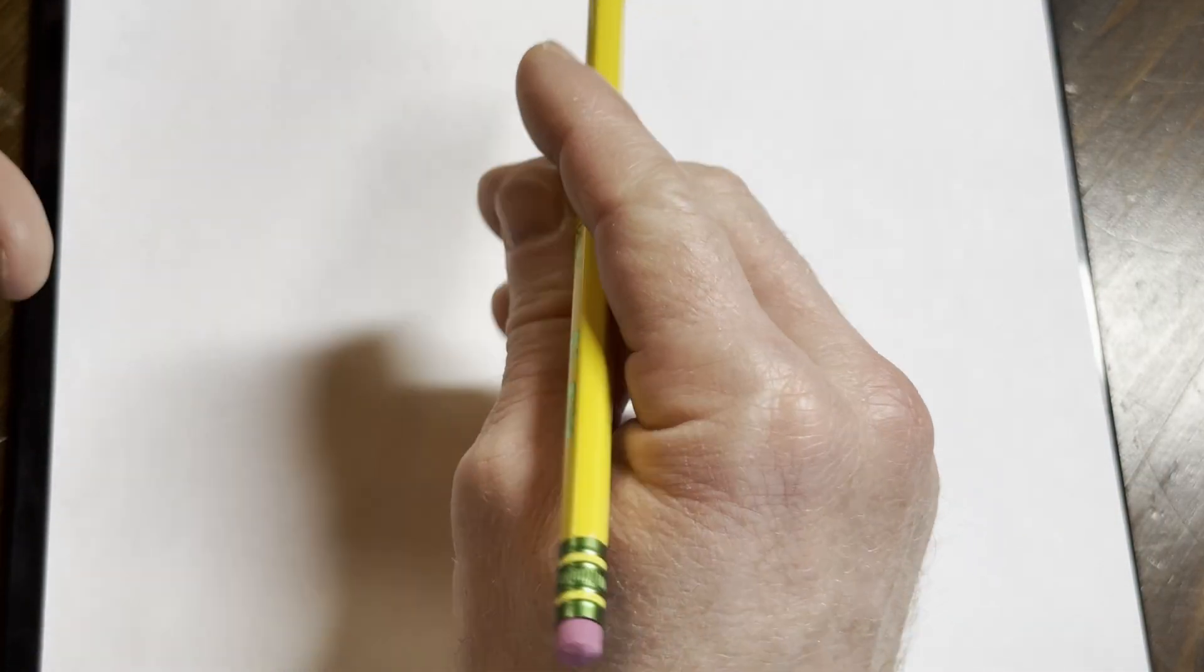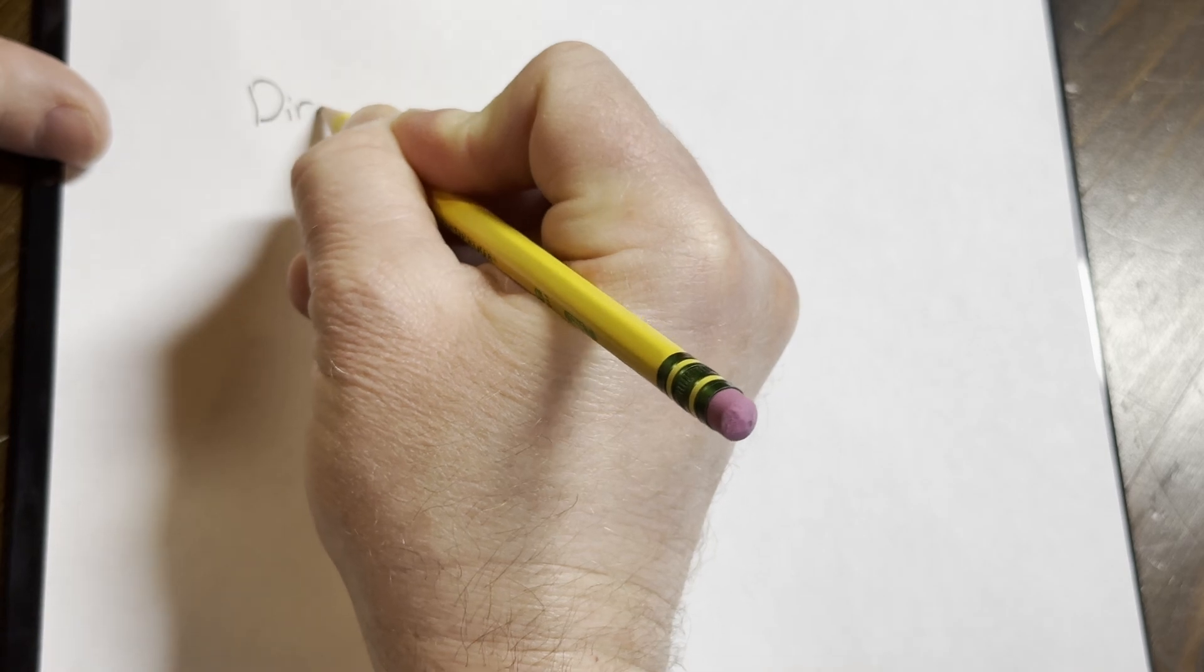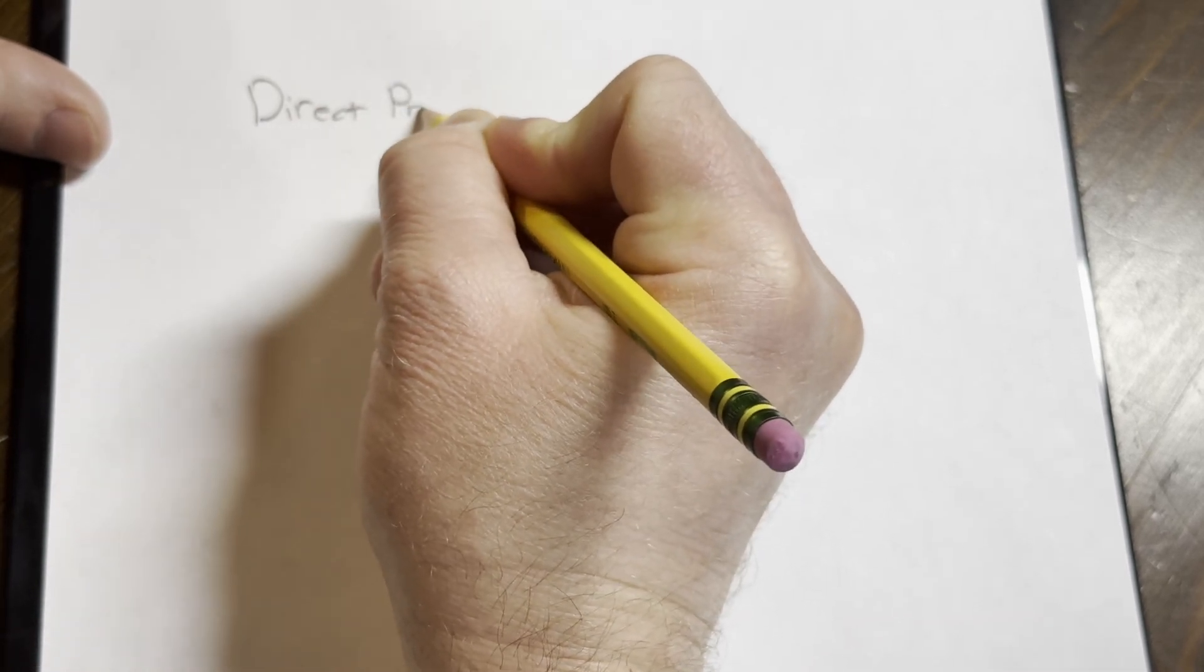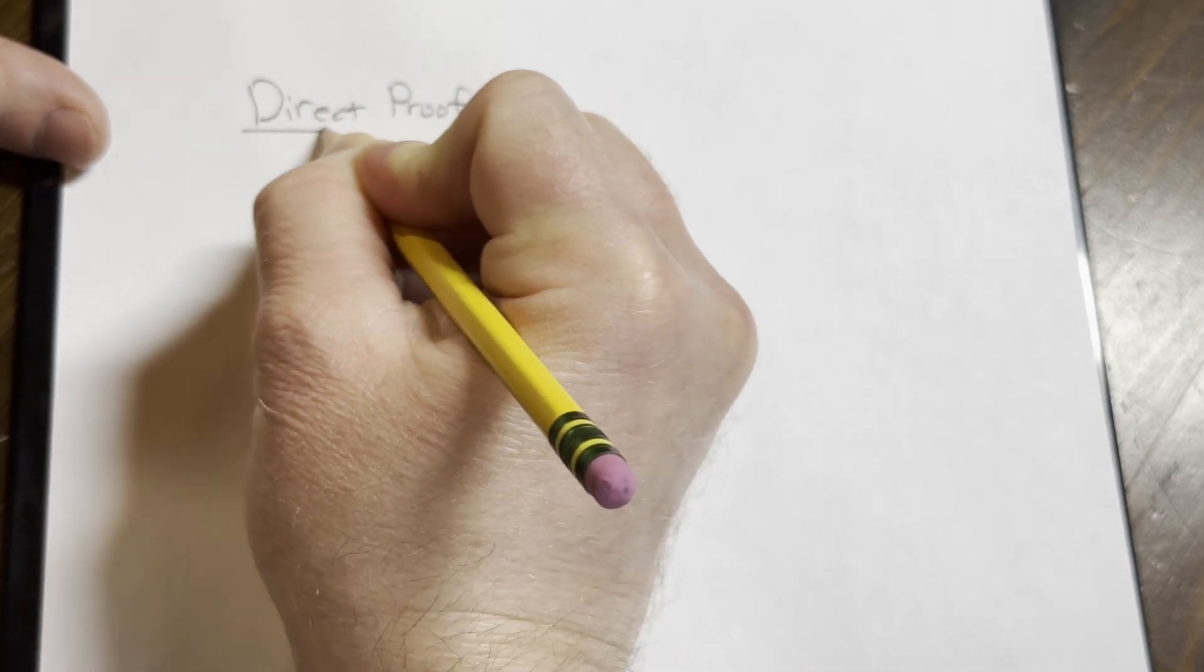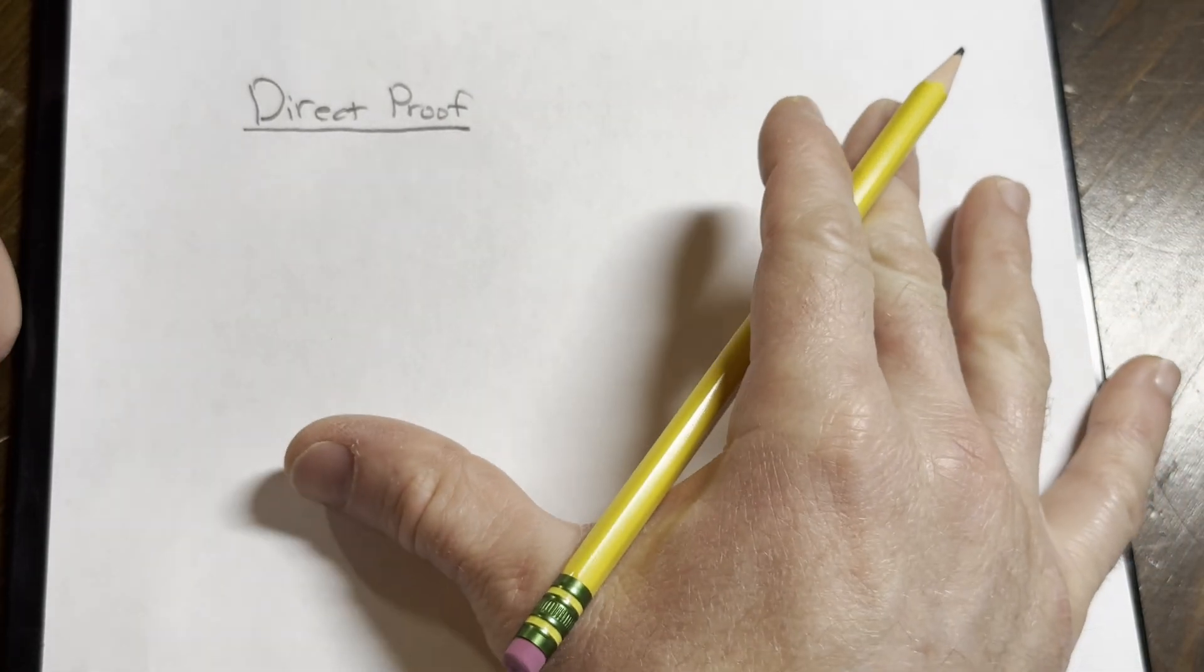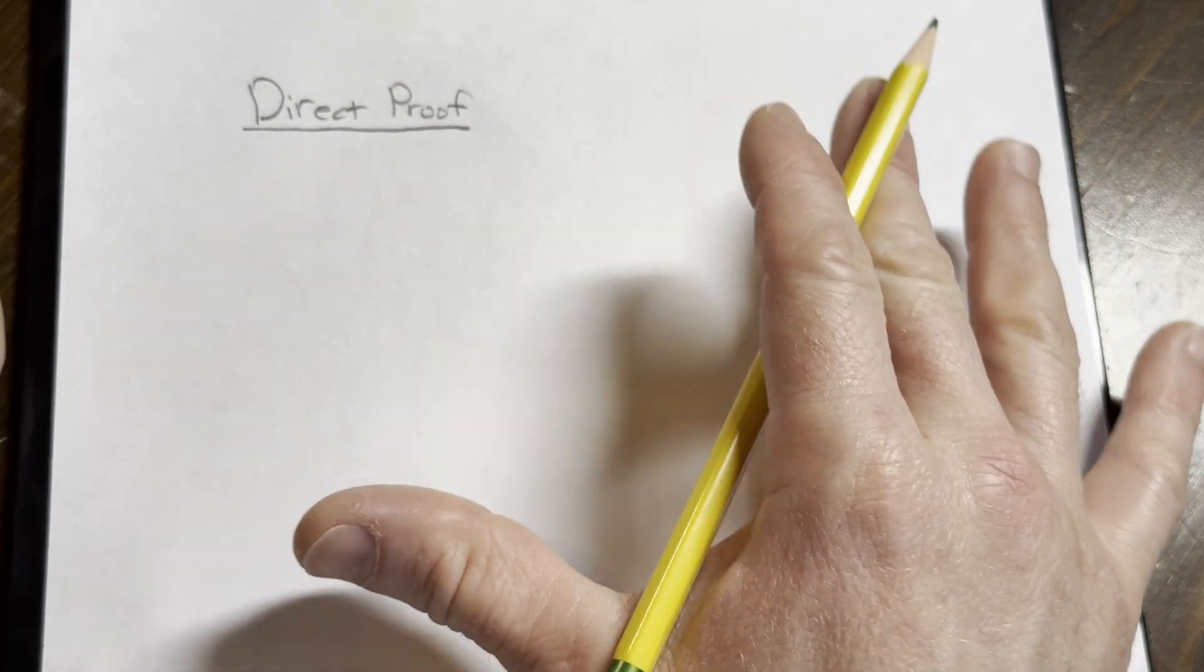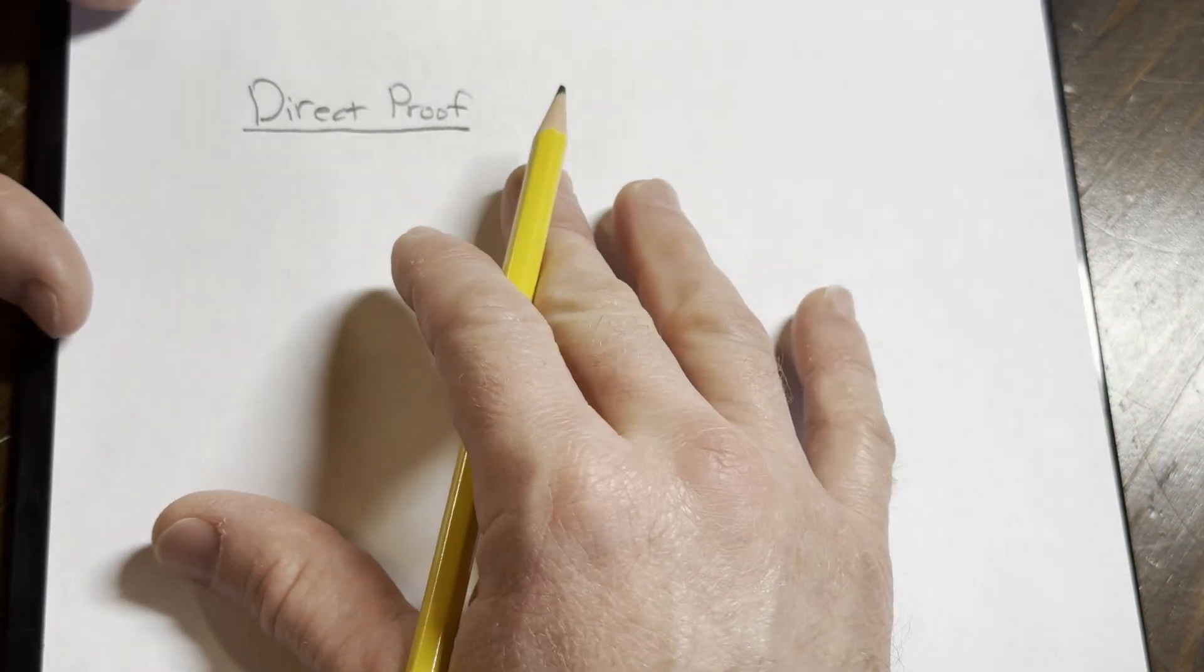Hello, in this video we're going to do an example of what is known as a direct proof. We're going to go through it very carefully. This is a very basic proof, so hopefully you can understand this example because proof writing is beautiful and this is a great way to get started.